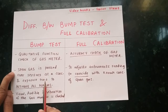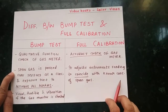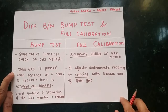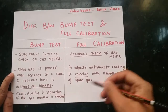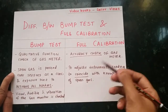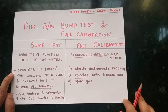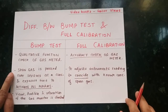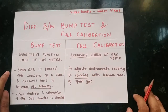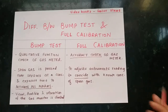In bump test, visual, audible, and vibration alarms of the gas meter are checked. In full calibration, there is no checking of alarms — it is just adjusting the value of the gas reading and carrying out an accuracy check. That is all about bump test and full calibration. Thanks for watching.